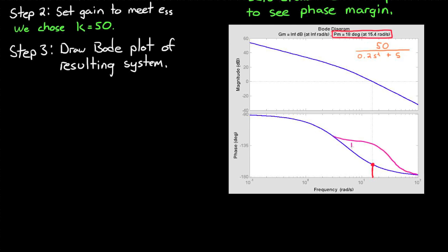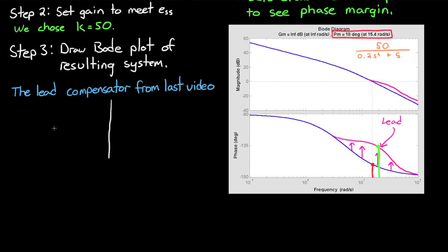In the last video, we added a lead compensator to increase the phase margin. The philosophy behind that design was to add phase to the system where you want it, without adjusting the gain at that point by too much. We came up with a lead compensator that had a zero around minus 11 and a pole around minus 45. But this is where I'm going to blow your mind — what if I told you that we could still meet our phase margin requirement by designing a lag compensator rather than a lead compensator?